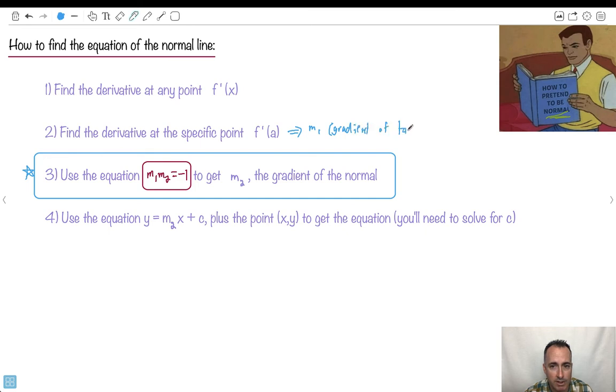But we don't want the tangent line, we want the normal line. So we have to do something to the gradient of the tangent. And what do we do? Well basically if you think about this, if you get m2 by itself, you end up with m2 = -1/m1. So basically you take the negative reciprocal. You take your m1 value, you flip it and you change the sign. Or you can just say you use this equation. That gets you m2, which is the gradient of the normal. That's what you actually need.